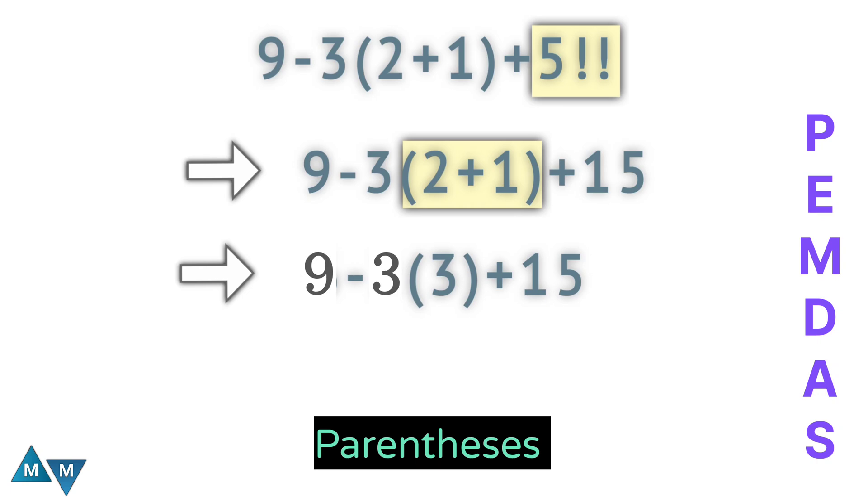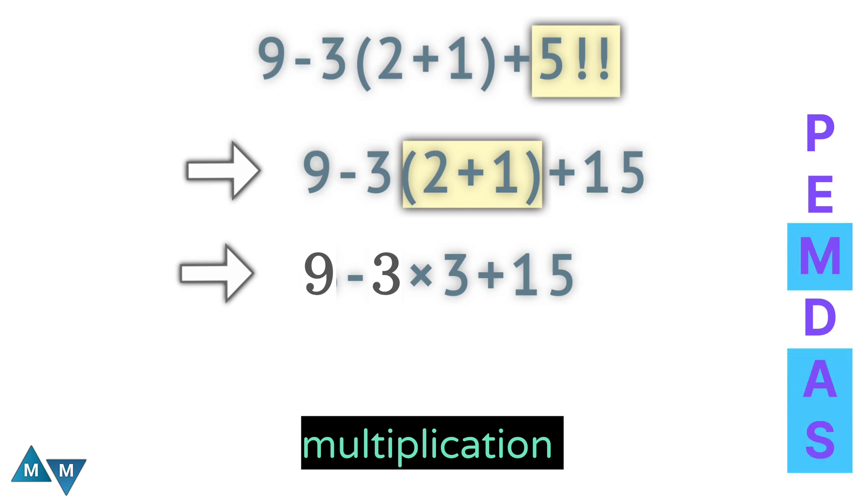Now 3 next to this parentheses—this is actually multiplication. According to PEMDAS rule, multiplication has a higher priority. So 3 times 3 will be our next move, which equals 9.